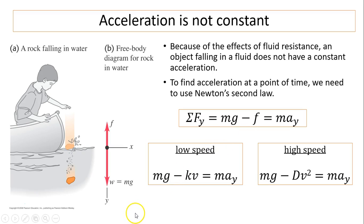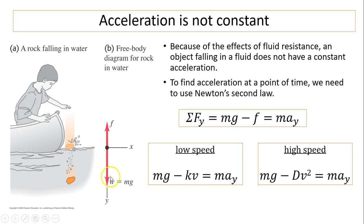In both cases, acceleration is not constant. For a rock falling in water, the free body diagram shows weight W, which is constant, and fluid resistance f, which changes. Therefore acceleration is not constant. Because of fluid resistance, an object falling in a fluid does not have constant acceleration. To find acceleration at any point in time, we use Newton's second law: the sum of forces in y equals mg minus f, which equals ma_y. Here downward is positive, and f is the magnitude of fluid resistance. For low speed: mg − kV = ma_y. For high speed: mg − DV² = ma_y.